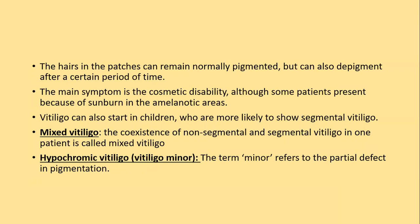Vitiligo also starts in children, who are more likely to show segmental vitiligo. Mixed vitiligo refers to the coexistence of non-segmental and segmental vitiligo in one patient. Hypochromic vitiligo (vitiligo minor) refers to a partial defect in pigmentation. In most patients, lesions start as hypochromic vitiligo and later turn completely depigmented.